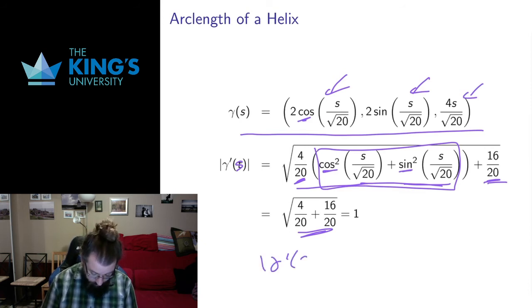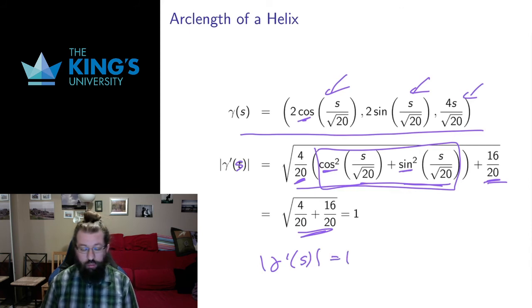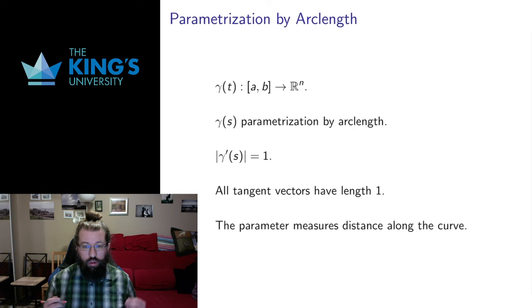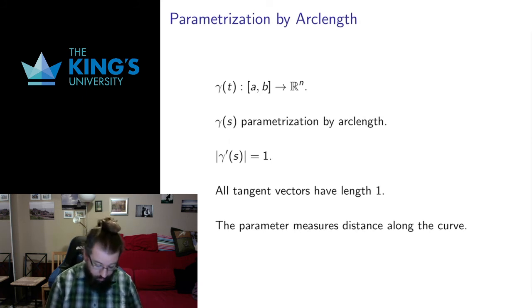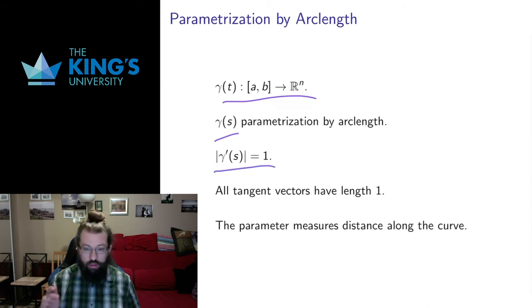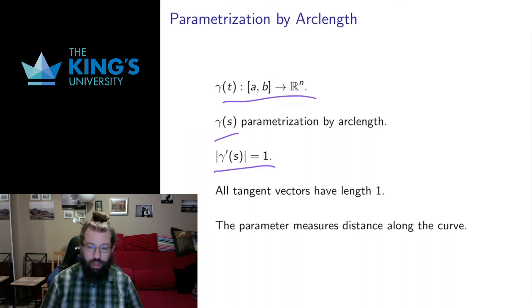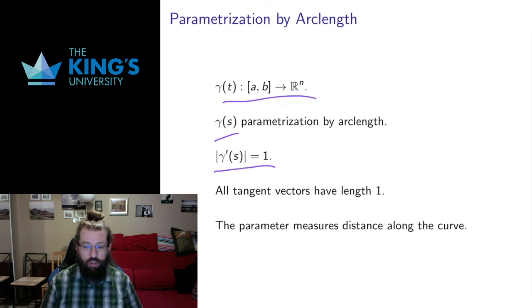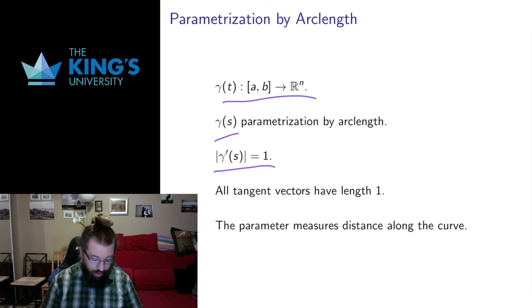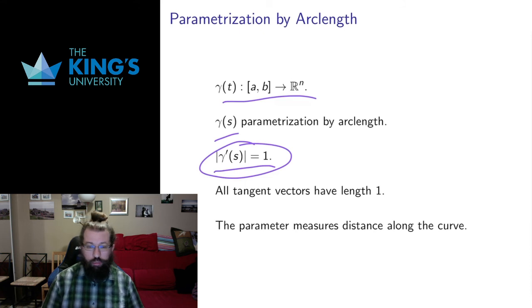That proves that the length of the derivative in the arc length parameter is in fact 1, which is what we expect the arc length parameter to do. To recap: if I have a parametric curve and I reparameterize by arc length, the length of the tangent vector of the arc length parameterization is 1, meaning the speed is 1. That makes sense because the parameter is distance — for each unit of time we move 1 unit of distance. The arc length parameterization is the unique parameterization with that property, and you can check this for any parameterization by arc length — the tangent vectors will always have length 1.